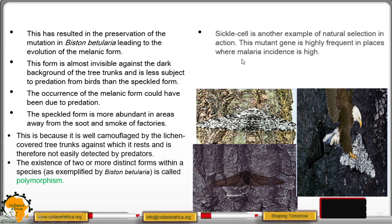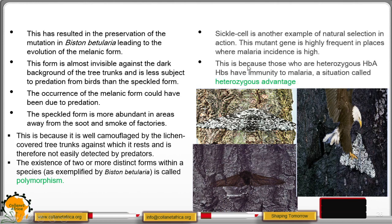Another example of natural selection in action is sickle cell trait. This mutant gene is highly frequent in places where malaria incidence is high. This is referred to as heterozygous advantage, as such individuals have high immunity to malaria.